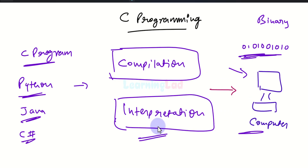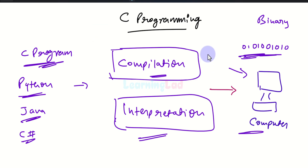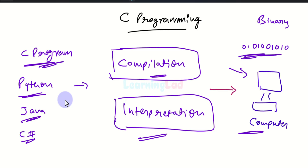In the interpretation method, a program called the interpreter is used. It reads the source code line by line, converts each line, and then executes it. So the interpreter goes through the source code, reads one particular line of instruction, converts it to machine code, executes it, then comes back and reads the next line, converts it, and executes it.